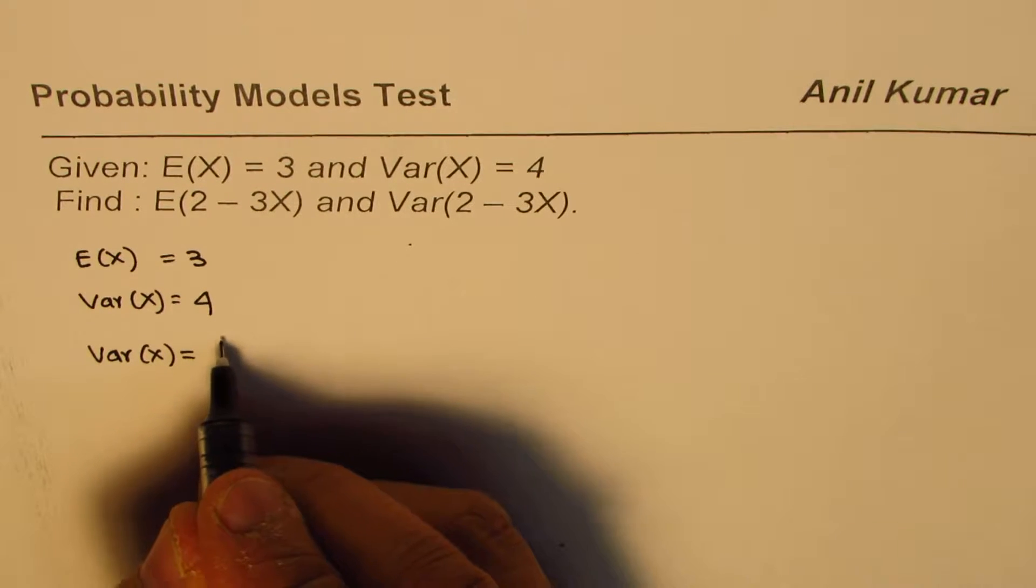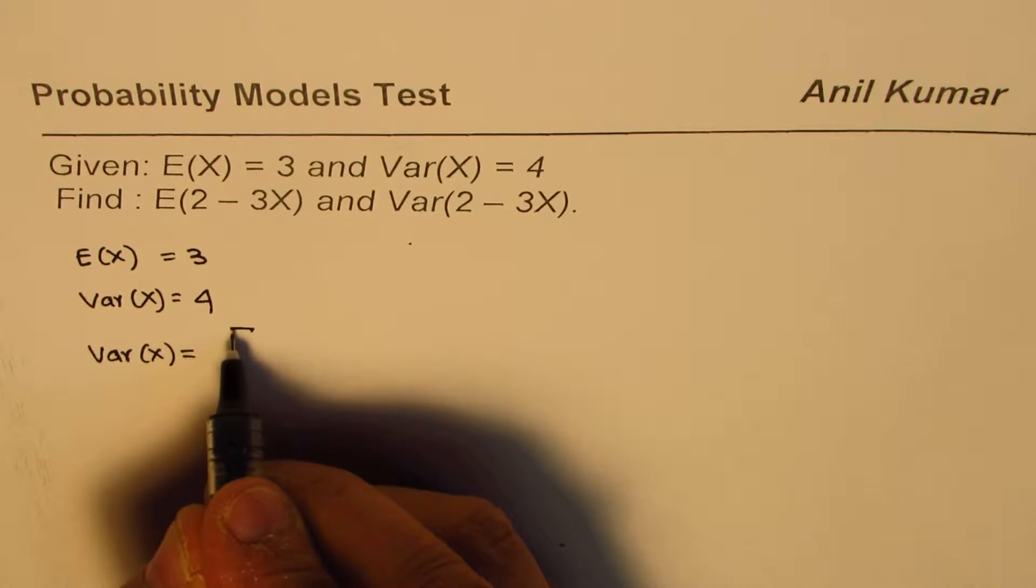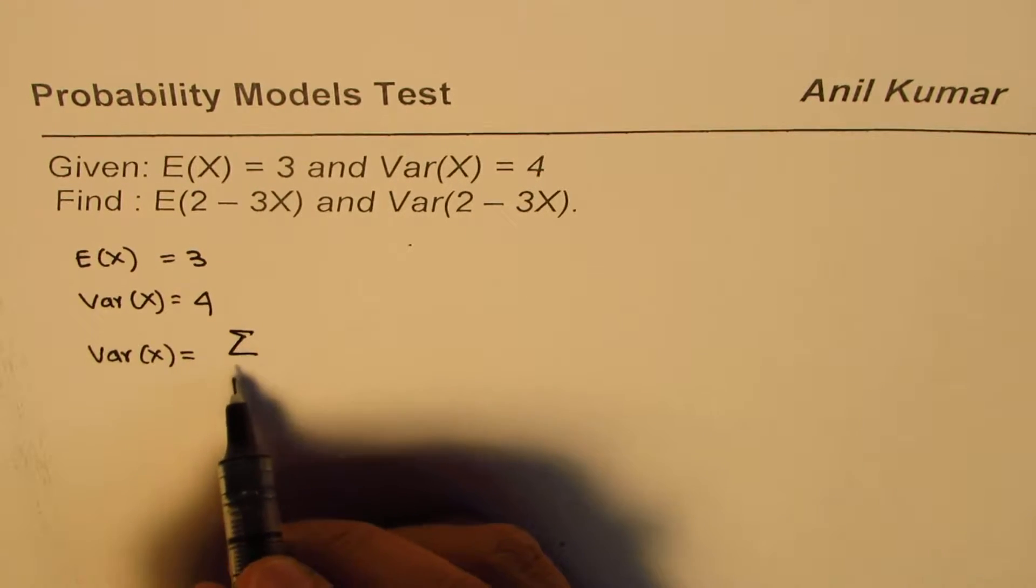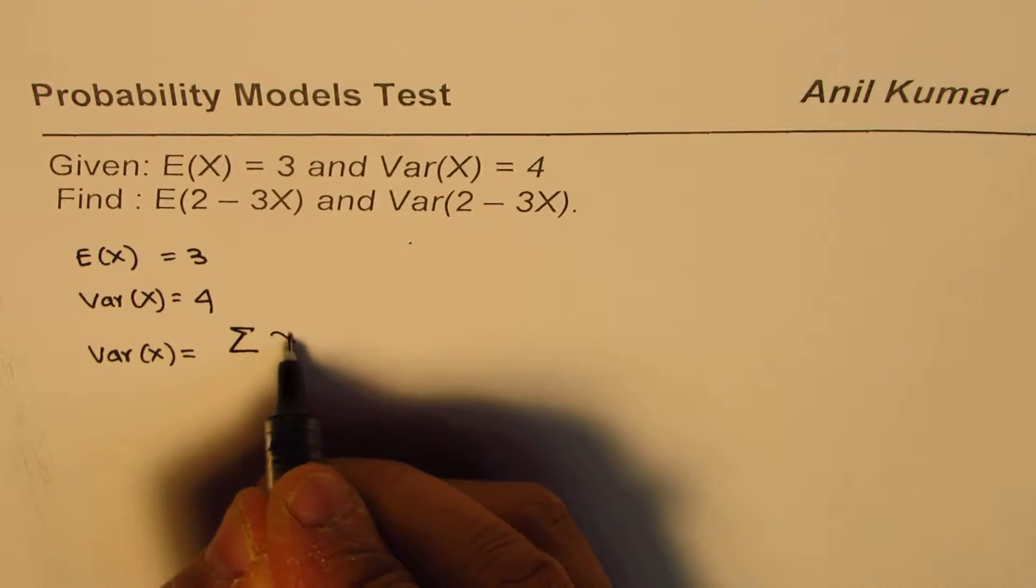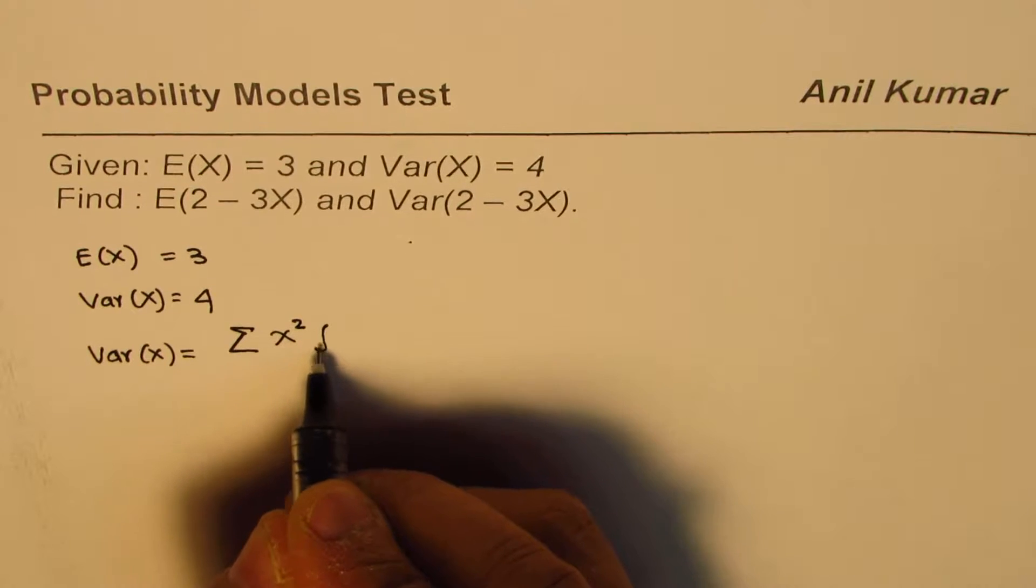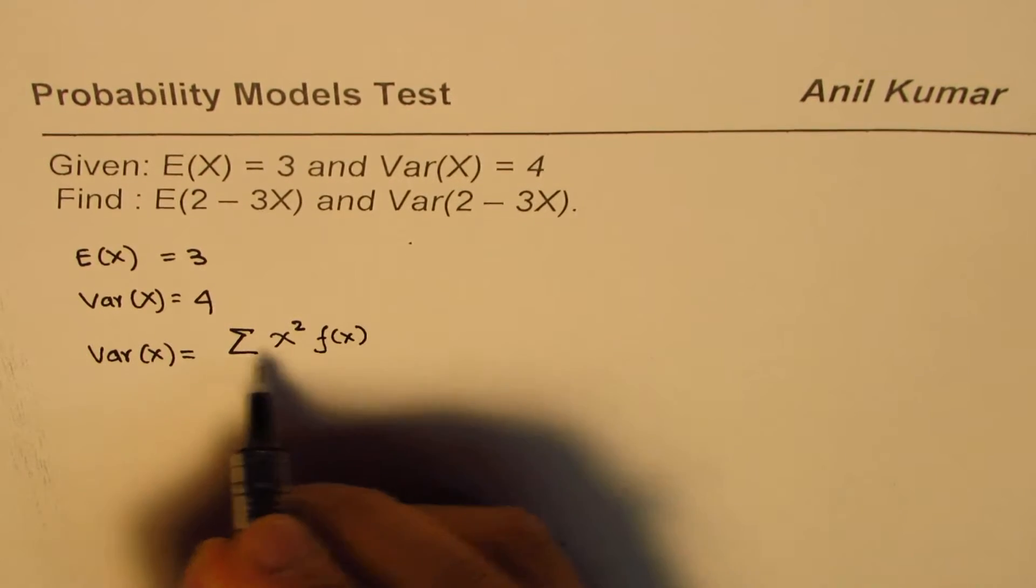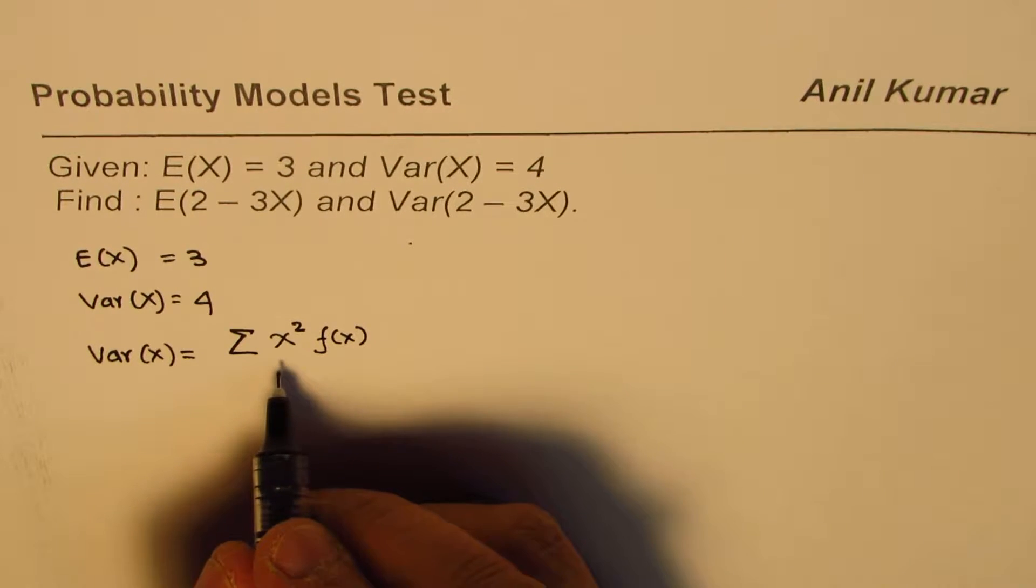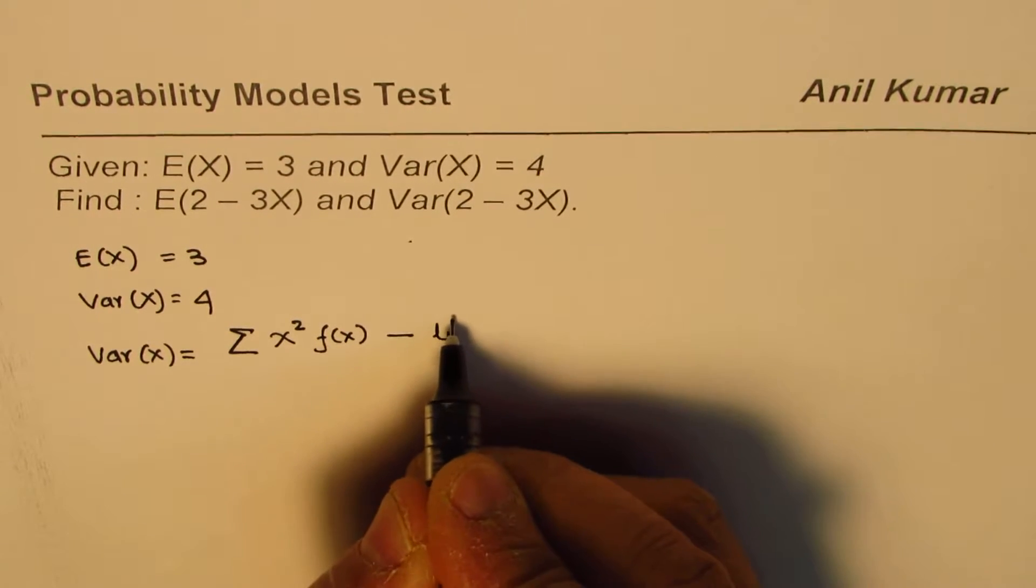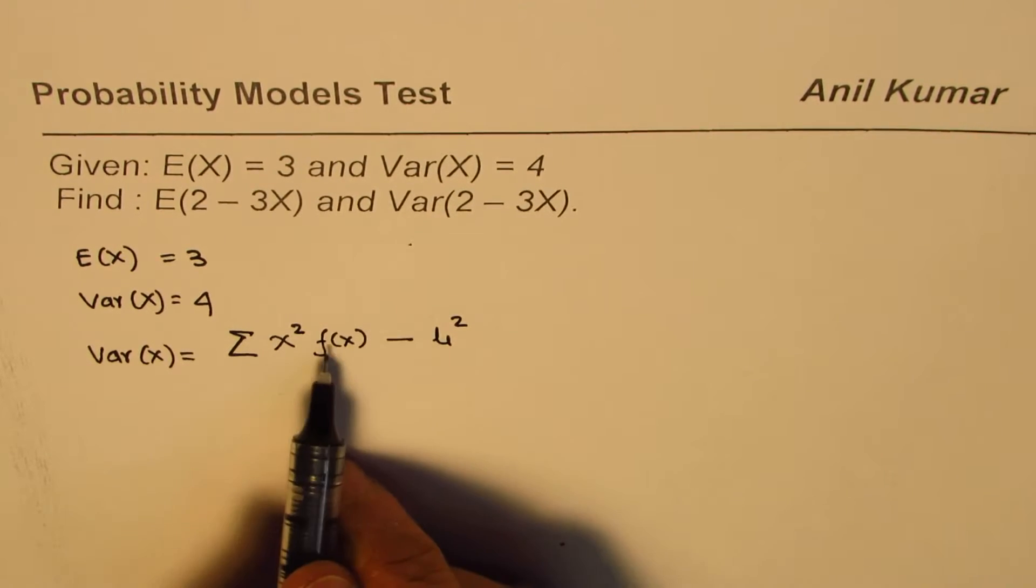In general, we could write this as sigma or when you're doing continuous functions, it could be integral. x squared probability or f of x. That is the mean of squares minus square of mean.